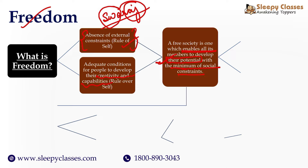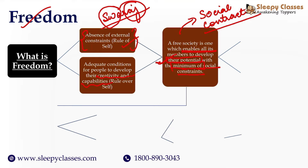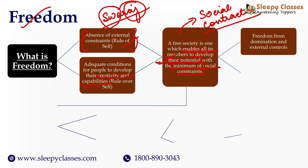A free society enables all members to develop their potential with minimum social constraints. It is not written 'with no social constraints' — what is written is 'minimum.' As little as possible, however some reasonable constraints can be put because we are living in society. This idea of the social contract is that a minimum social contract is necessary to establish a political authority which can set reasonable ground rules through which society can work.